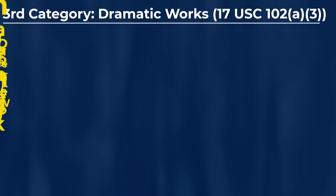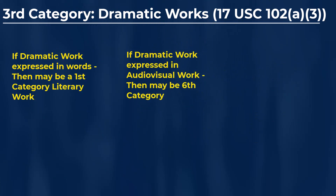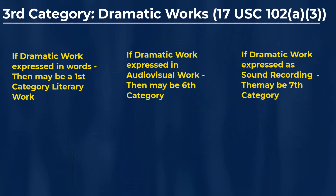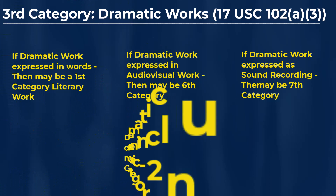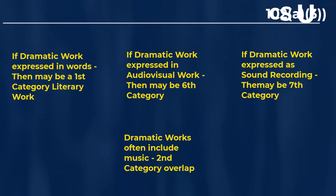For example, if the dramatic work is expressed in words, then the dramatic work may be a literary work of the first category — that could be the case for written scripts and/or written screenplays. If expressed in an audiovisual format such as a video, motion picture, or movie, then the dramatic work may fall into the sixth category. If expressed in a sound recording format, then it may fall into the seventh category. And dramatic works often may contain or utilize music, so the third category may also overlap with the second category for musical works.